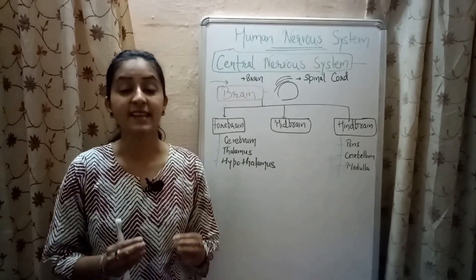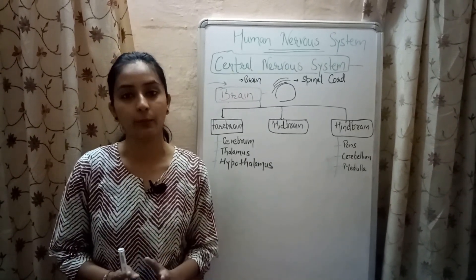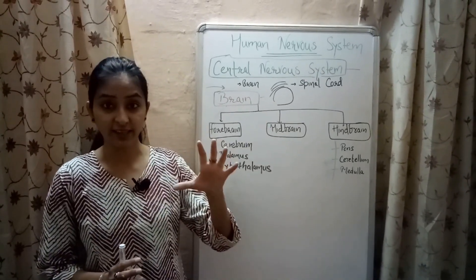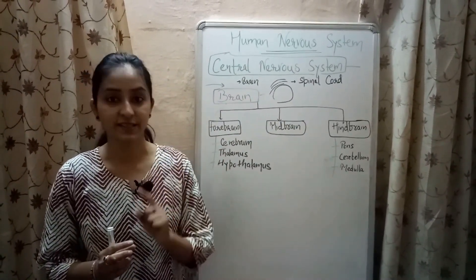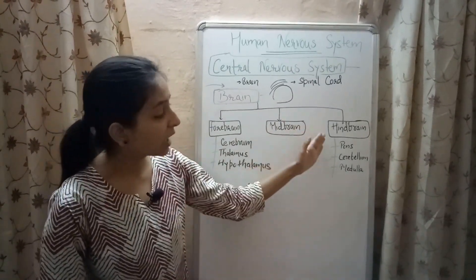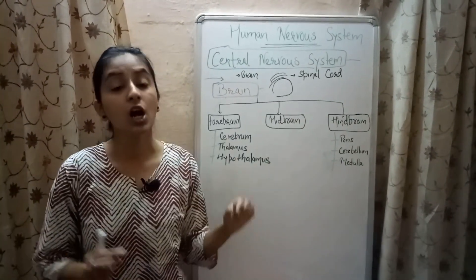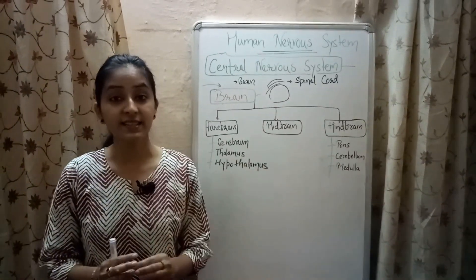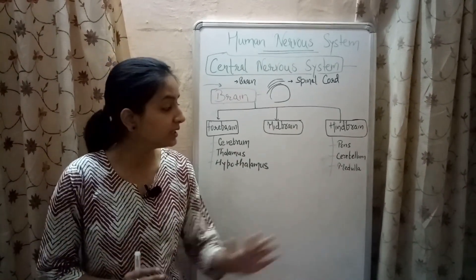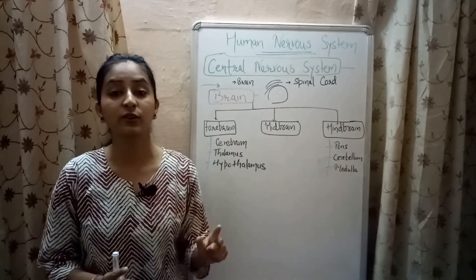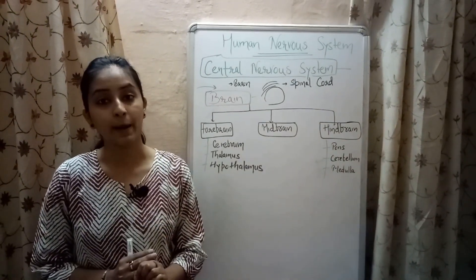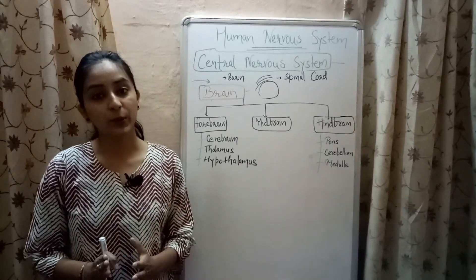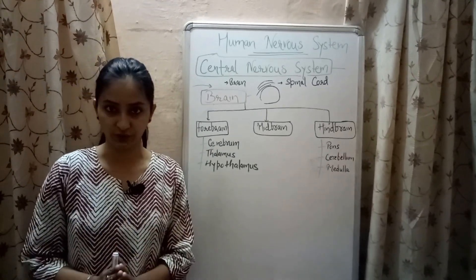Midbrain also controls the size of the pupil and the shape of the eyelids — for example, when you enter a dark room from bright sunlight, the pupil size increases, which is regulated by the midbrain. Hindbrain consists of pons, cerebellum, and medulla. Pons is responsible for regulating respiration. Cerebellum maintains body posture and balance. Medulla is responsible for regulating involuntary functions such as peristaltic movement of the alimentary canal, breathing rate, blood pressure, and heartbeat.